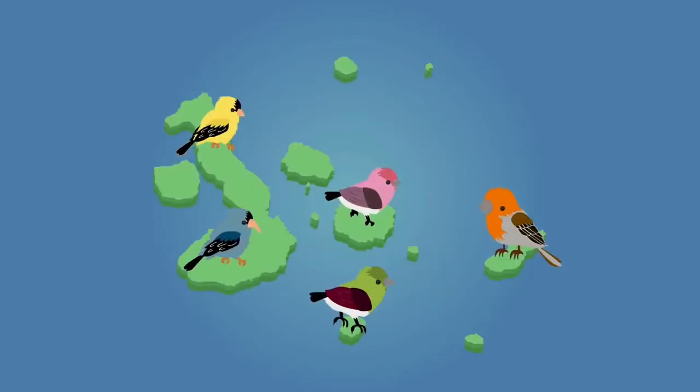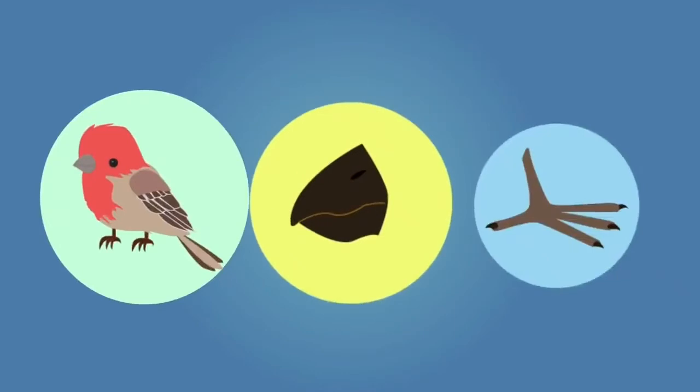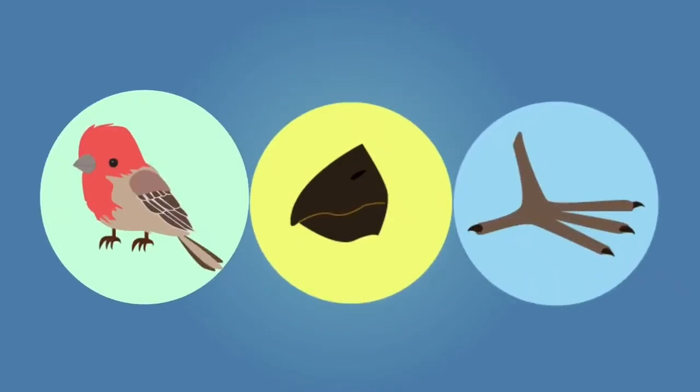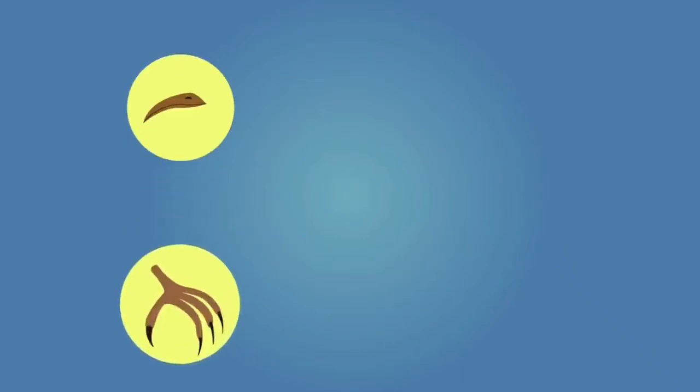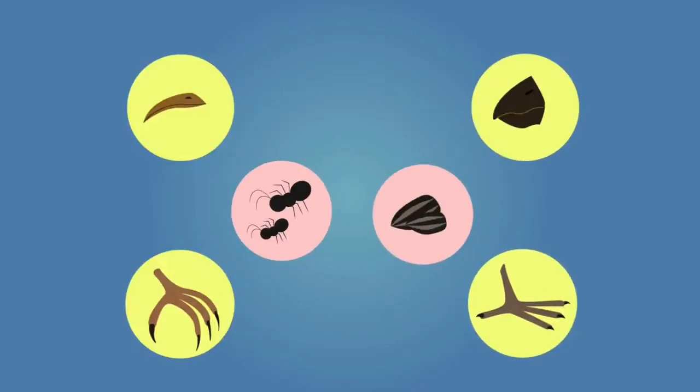The finches on each island showed distinct variations in their overall size, beak shape and claw size. These differences were attributed to the differing food sources available on the various islands of the Galapagos. Some of the birds had long thin beaks and sharp claws suited to catching and eating insects, while others had large powerful beaks suitable for cracking open nuts.